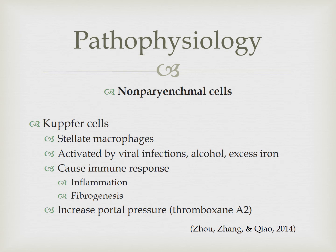With activated Kupffer cells, they release a hormone called thromboxane A2, and this hormone causes vasoconstriction, which leads to increased portal pressure. We'll talk about some complications from that increased pressure shortly.